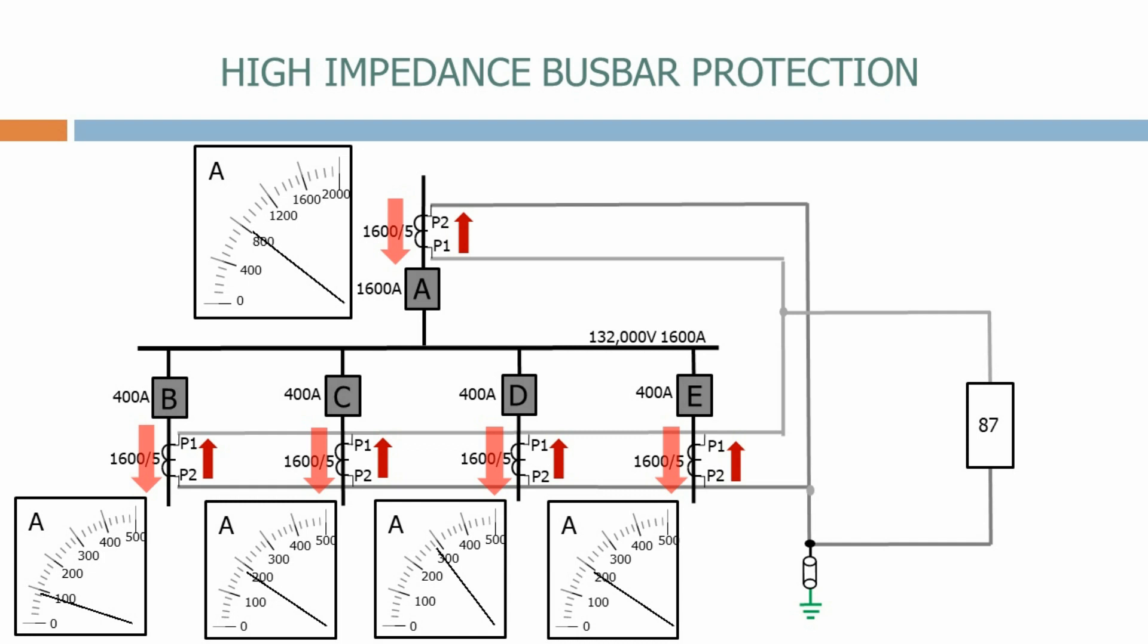As the name suggests, the busbar relay has a high impedance and therefore no current wants to flow through the relay and it all circulates around the current transformer secondaries. Let's now calculate the currents flowing through each of the current transformer secondaries.